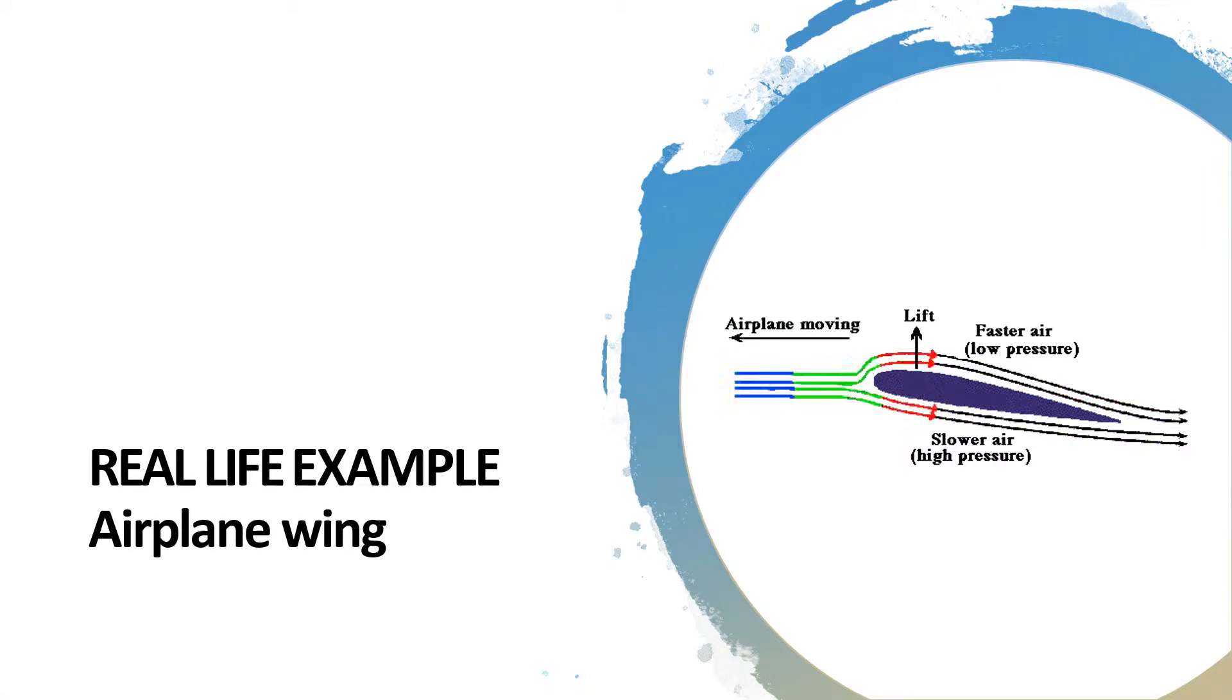On top is the lower pressure and on bottom there is higher pressure, due to Bernoulli's principle that if there is higher speed there will be lower pressure, and if there is lower speed there will be higher pressure.